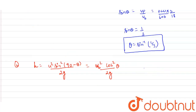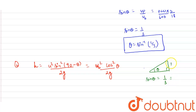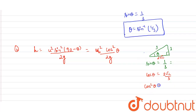To find cos θ, since sin θ equals 1/3, we consider a right-angle triangle where the perpendicular is 1 and the hypotenuse is 3. Using the Pythagorean theorem, the base equals 2√2. Therefore cos θ equals 2√2 divided by 3, and cos² θ equals 8/9.